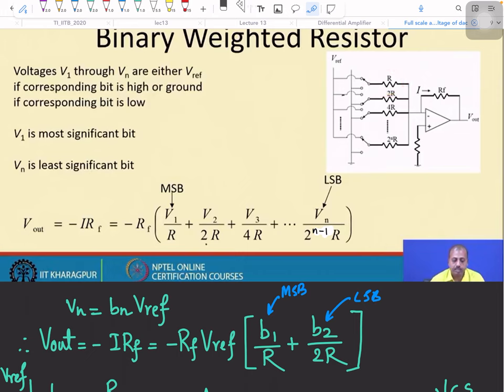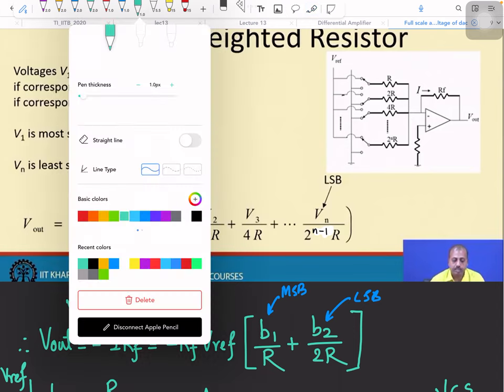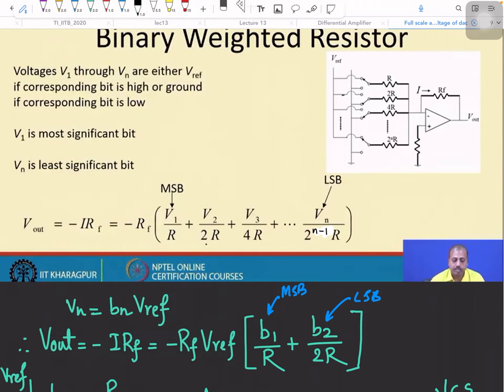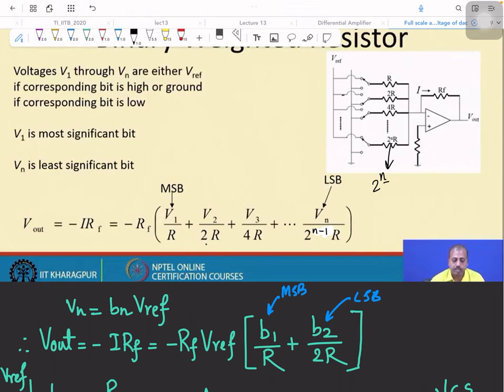All right, so there is a correction in the figure. It will be 2 to the power N minus 1 R. Because we are starting from 2 to the power 0, so total N resistors are there.